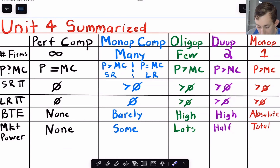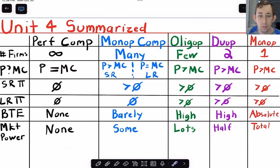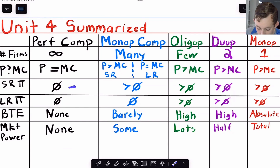Short run profit in perfect competition is zero, and long run profit is also zero. Remember, if profits are positive, new firms are going to enter, they're going to drive up supply and keep driving it up until profit is zero. That's all we're saying here.